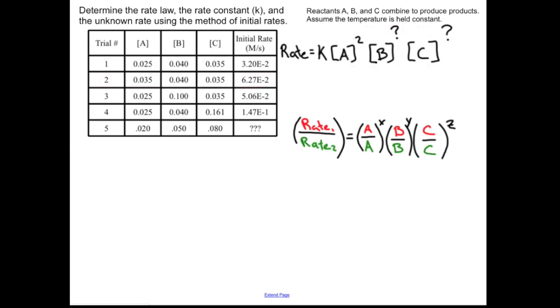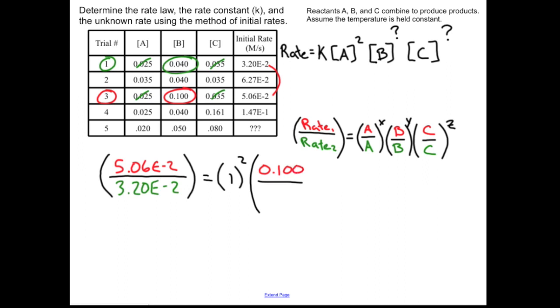I've rewritten my rate law up top with our new information where we have the 2. Now I'm making a comparison of trials 3 and 1 because the concentration of A is unchanging, the concentration of C is unchanging, and I'm only going to have the concentration of B that I need to worry about. I'm going to have 5.06E-2. Again I'm going to have 1, which doesn't matter because it's going to stay a 1. Here's the interesting stuff—B and another 1 raised to the power of Z. It's going to remain a 1.